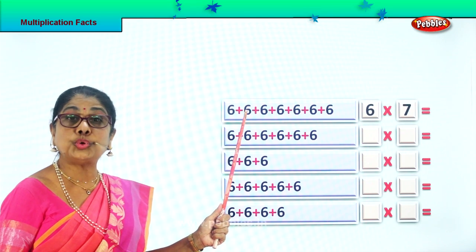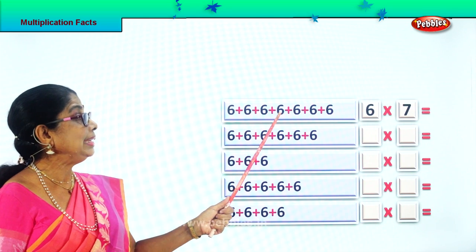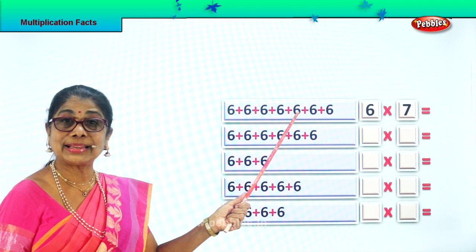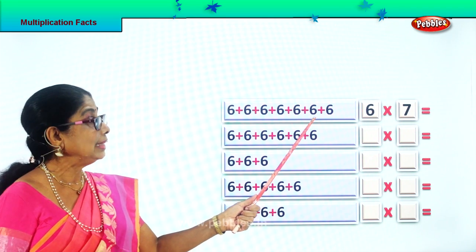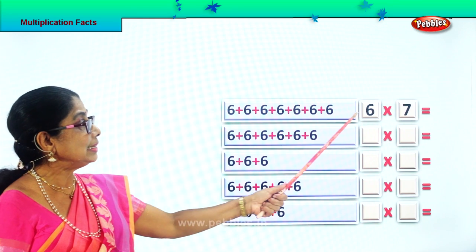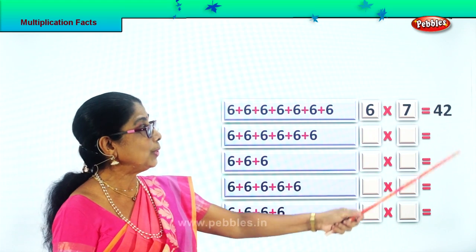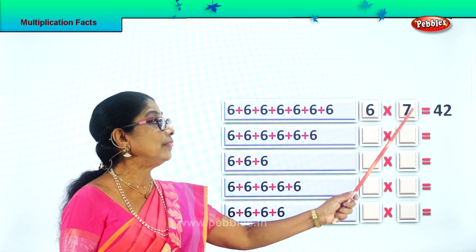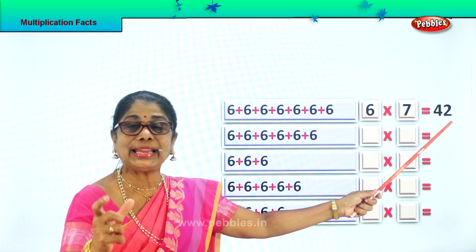What is 6 plus 6? 12. 12 plus 6? 18. 18 plus 6? 24. 24 plus 6? 30. 30 plus 6? 36. 36 plus 6? 42. So 6 seven times is 42. 6 into 7 is 42. That is a multiplication fact.